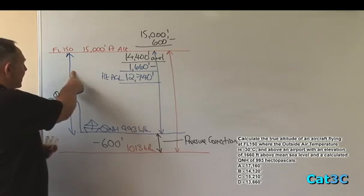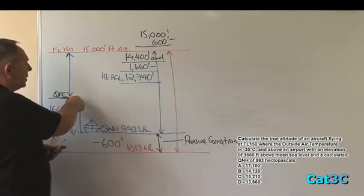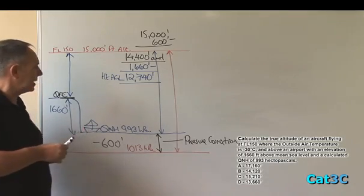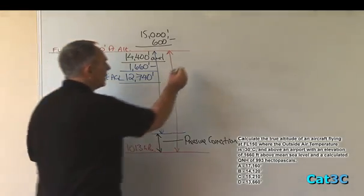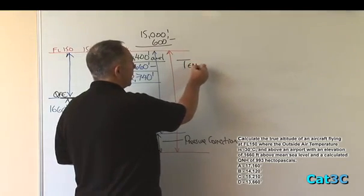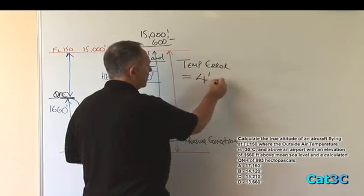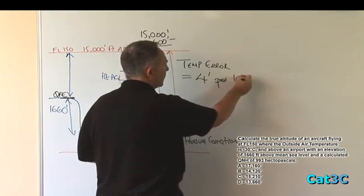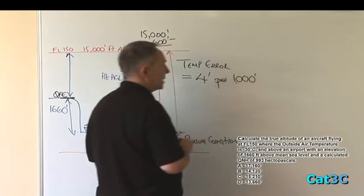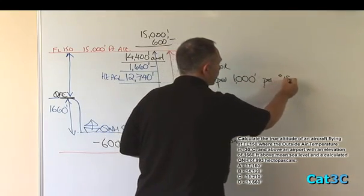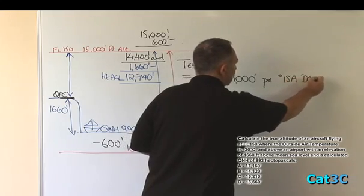Now we've identified that the temperature error only occurs within that 12,740 feet, we can calculate the temperature error. And temperature error is equal to 4 feet per 1,000 feet above the pressure datum per degree of ISA deviation.